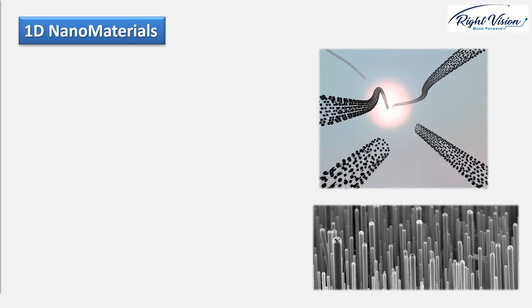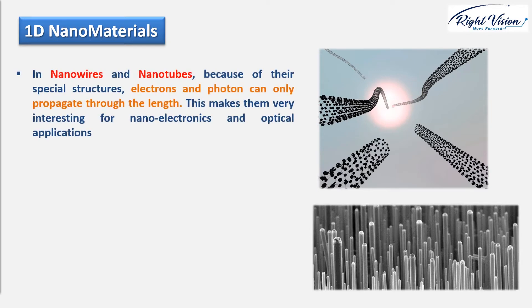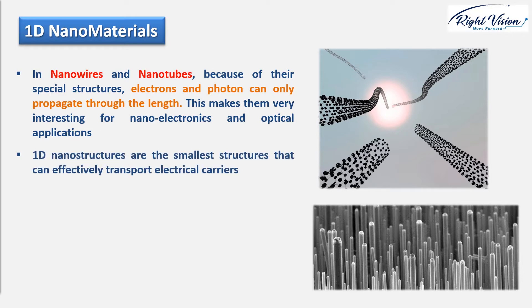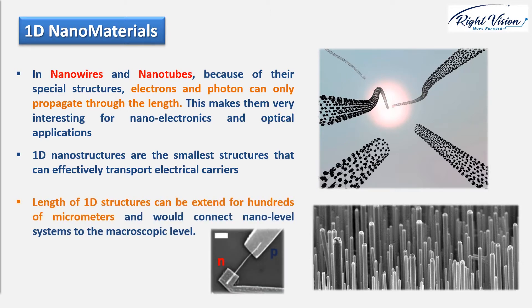For nanowires and nanotubes as one-dimensional nanomaterials, because of their spatial structure, electrons and photons can only propagate through the lengths. This makes them very interesting for nanoelectronics and optical applications, to be used as very thin and long wires in electronic integrated circuits. One-dimensional nanostructures are the smallest structures that can effectively transport electrical carriers.